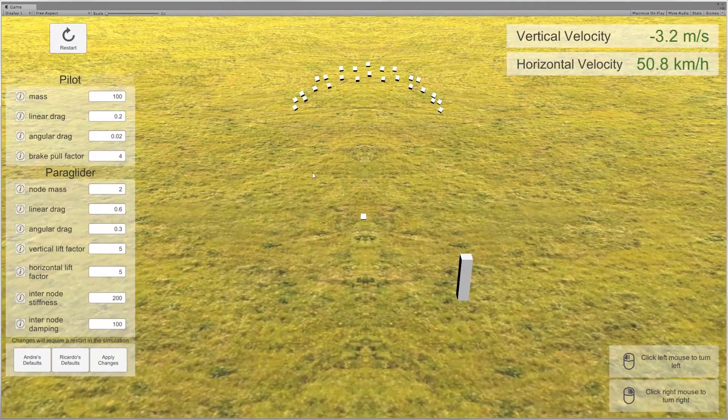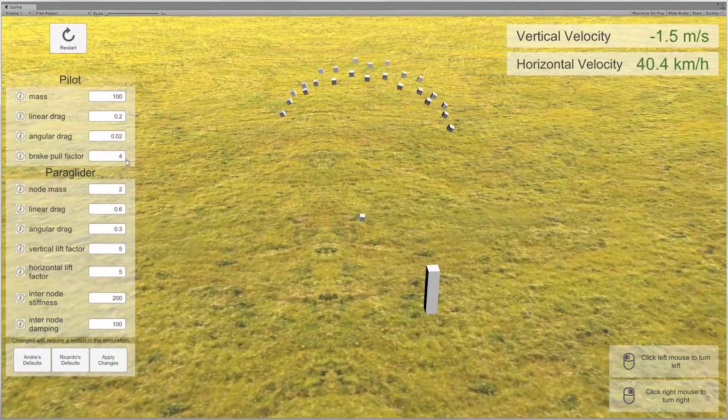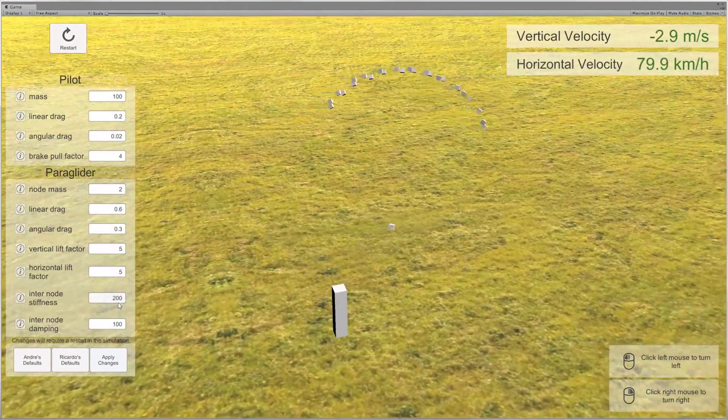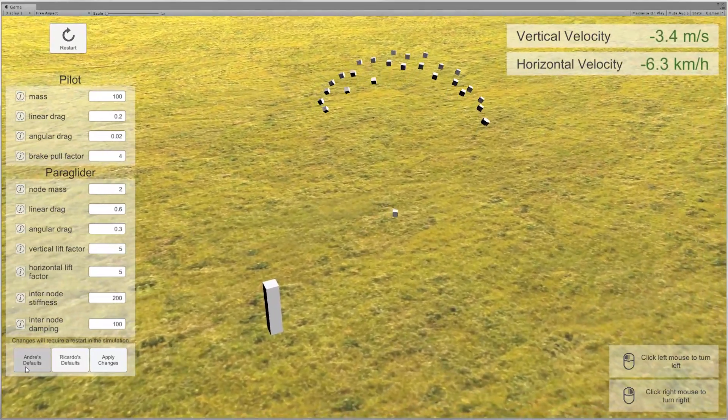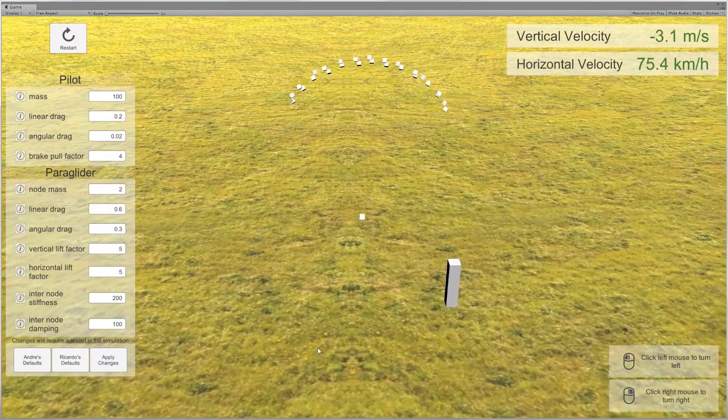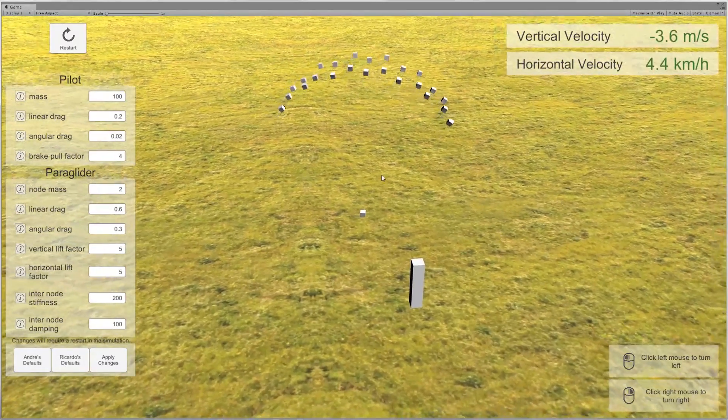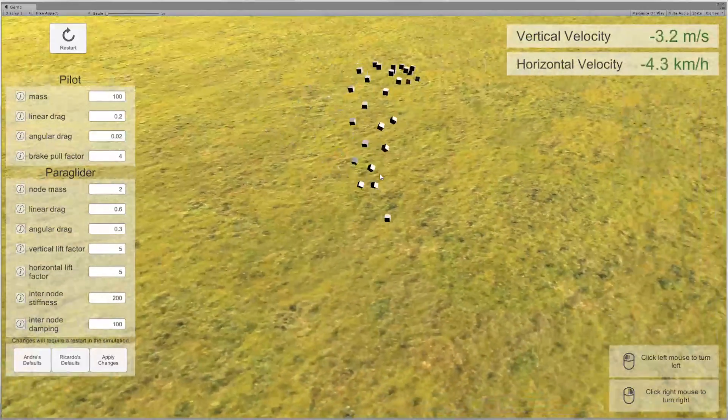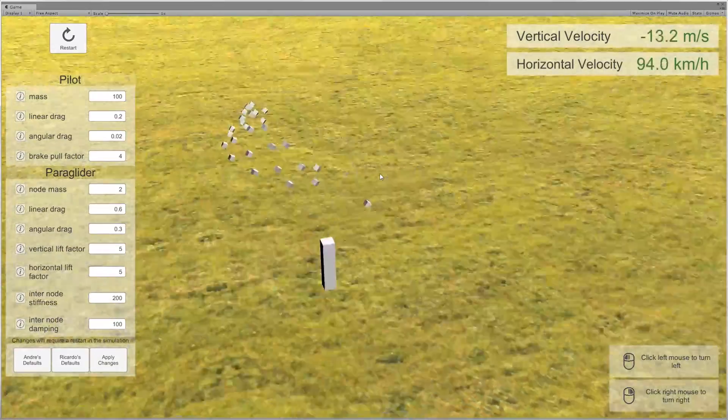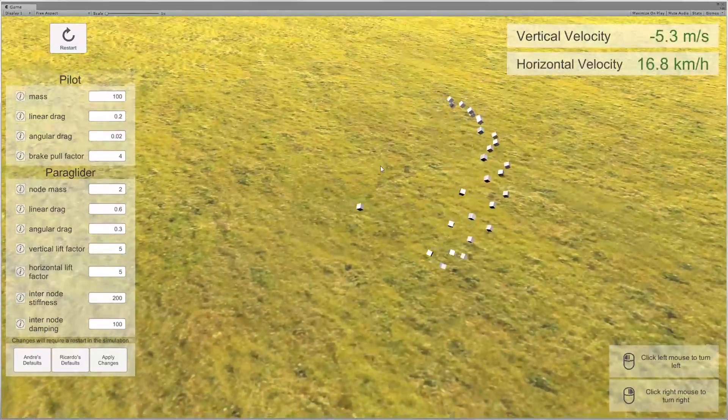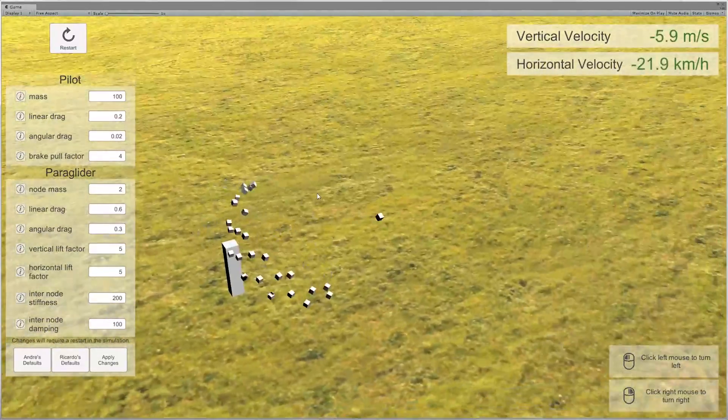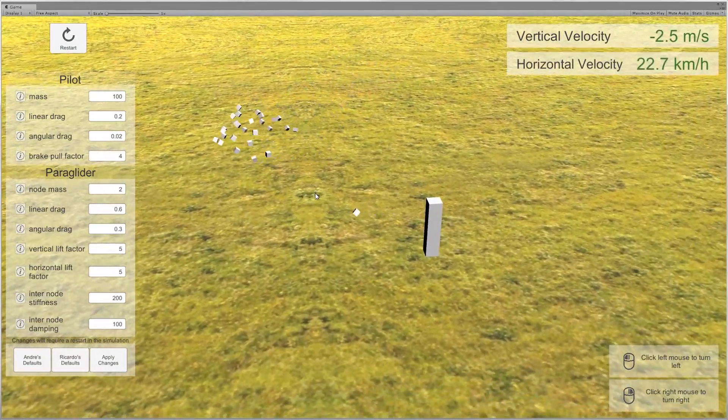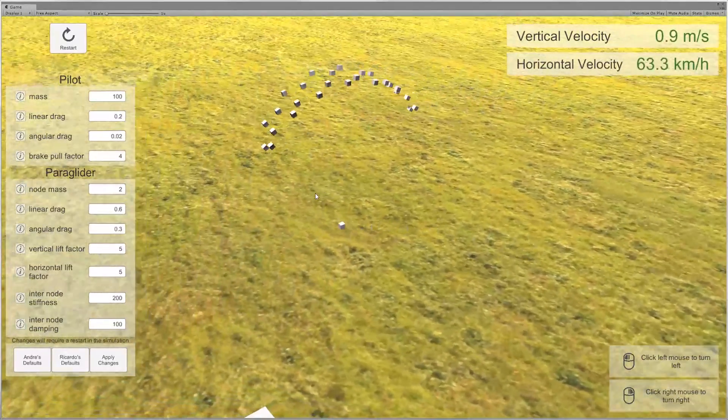Because there's so many parameters on the game we decided to put them on the side, both for the pilot and the paraglider so it's easy to test. And we've also put my defaults, Ricardo defaults and you can create your own just by changing those values and clicking apply changes. I like my settings a little bit loose so that there's a lot more give in the paraglider and pulling more on the brakes. And Ricardo's settings would be a bit better for like trying thermaling and stuff, but there aren't any thermals in the game yet.